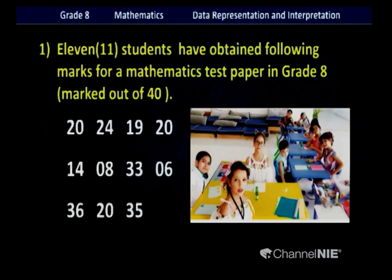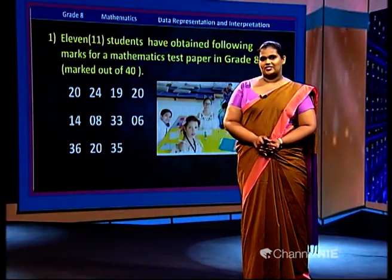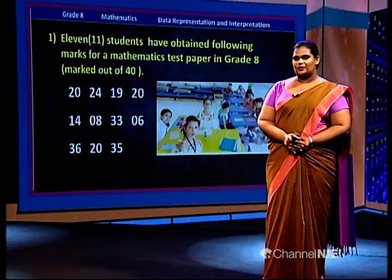Now have a look at these marks: 20, 24, 19, 20, 14, 8, 33, 6, 36, 20 and 35. Looking at this data, I can observe only two places in each and every number — each number consists of only the ones place and the tens place. So I have got only two decimal places.